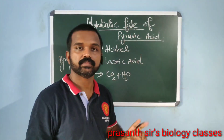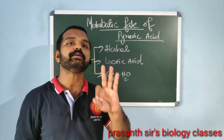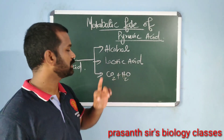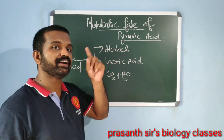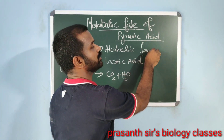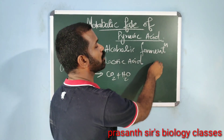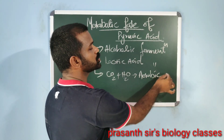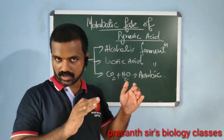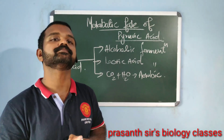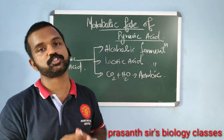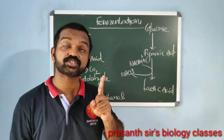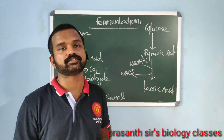The metabolic fate of pyruvic acid depends on the cellular need. Three major pathways exist: it can be converted into alcohol, lactic acid, or carbon dioxide and water. If alcohol is the final product, it is alcoholic fermentation; if lactic acid, it is lactic acid fermentation; if CO₂ and water, it is aerobic respiration. Fermentation is anaerobic respiration — the incomplete oxidation of respiratory substrate in the absence of oxygen — and based on the end product, it is of two types.